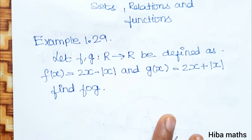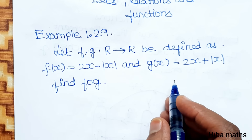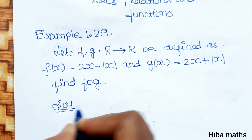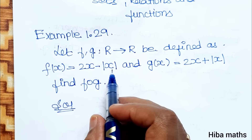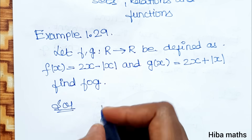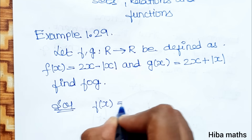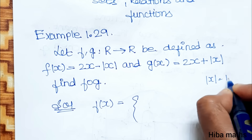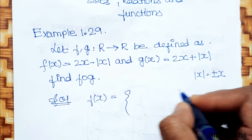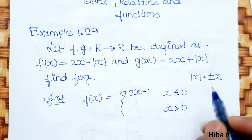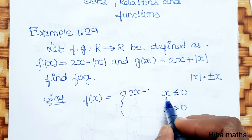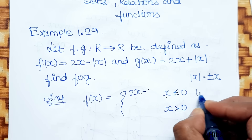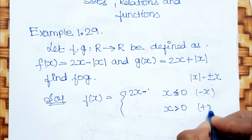Find f of g. So f of x and g of x — when x is equal to 0, modulus of x is equal to 0; when x is greater than 0, it is minus x; and it is plus x.